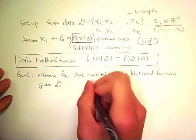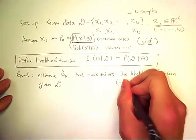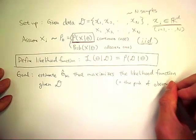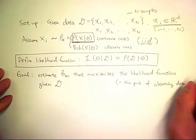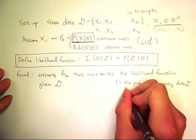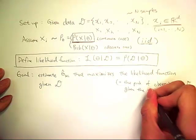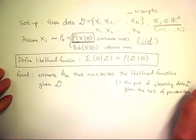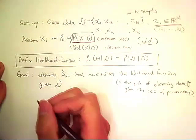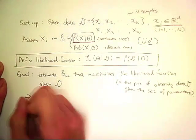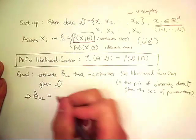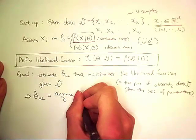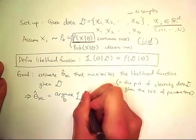This will be equivalent to maximizing the probability of observing data D given the set of parameters. So in more mathematical notation, theta hat M sub L is equal to argmax of theta likelihood of theta given D.